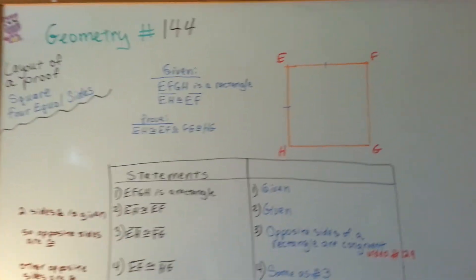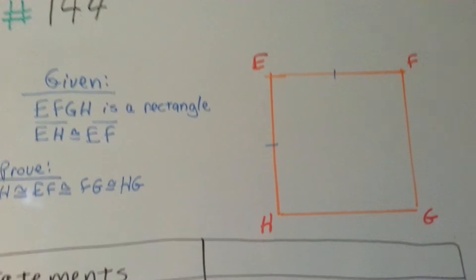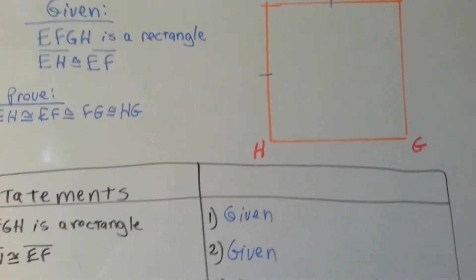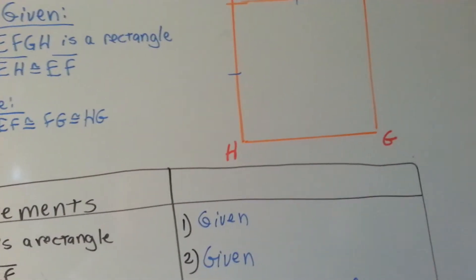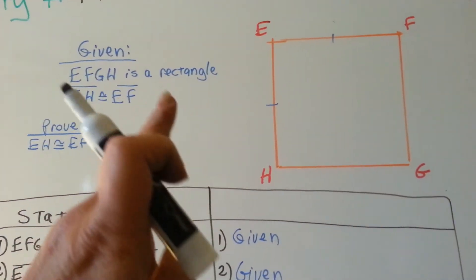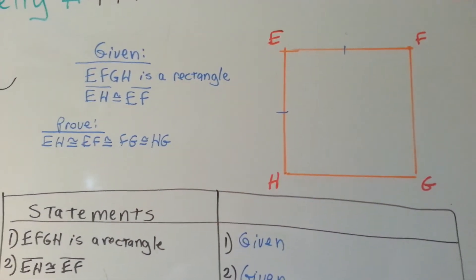So, let's look at our square and our given. It says that the given is that EFGH is a rectangle. Yeah, squares can be rectangles.